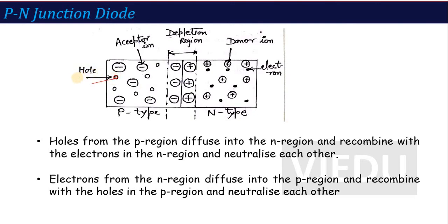In p-type, there are two types of charge carriers available. One is the majority charge carrier — holes. The second is the minority charge carrier, which we call acceptor ions. Holes are mobile ions, but acceptor ions are immobile — they cannot move. Similarly, in the n-type region, the majority charge carrier is electrons. Because n-type is made of donor ions, donor ions are also available, and they are immobile ions.